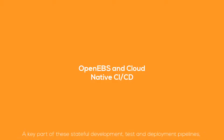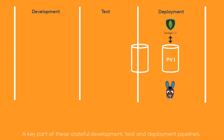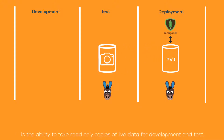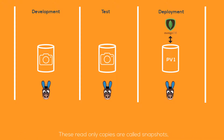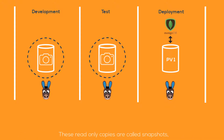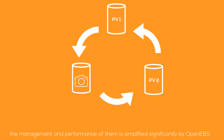A key part of these stateful deployment test and deployment pipelines is the ability to take read-only copies of live data for development and test. These read-only copies are called snapshots. The management and performance of them is simplified significantly by OpenEBS.